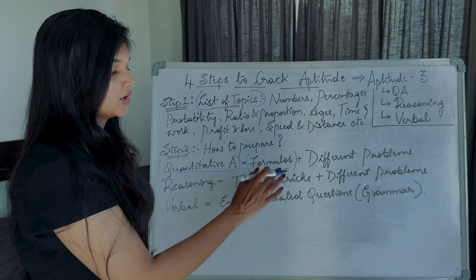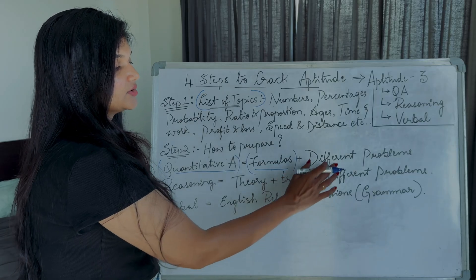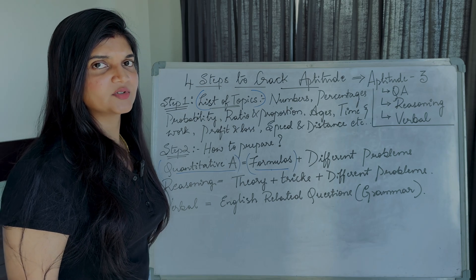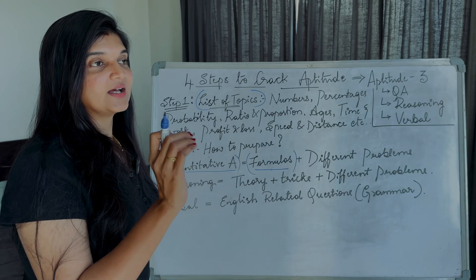Believe me, formulas help you a lot. It saves your time. So coming to the different problems, different problems. What kind of different problems is she referring to? Different scenario problems. So for example, if we take ages, let's take an example like Ram is of this age, Sham is of this age.